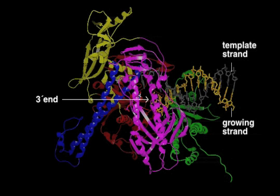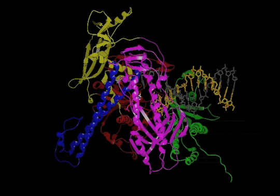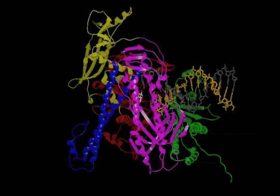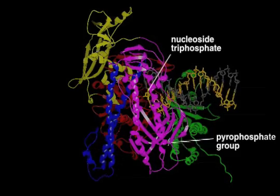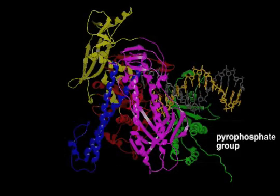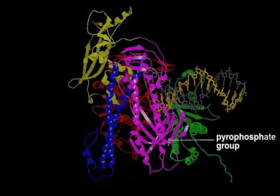The different domains of DNA polymerase are colored differently. Before a nucleotide can be incorporated into DNA at the 3' end of the growing strand, the blue finger domain of the polymerase moves inward to correctly position the nucleoside triphosphate. A pyrophosphate group is released when each nucleotide is added.